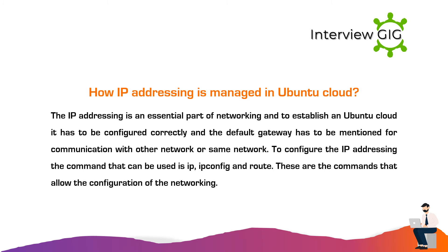How is IP addressing managed in Ubuntu Cloud? IP addressing is an essential part of networking. To establish an Ubuntu cloud it has to be configured correctly and the default gateway has to be mentioned for communication with other networks or the same network. To configure IP addressing, the commands that can be used are ip, ifconfig, and route. These commands allow the configuration of networking.